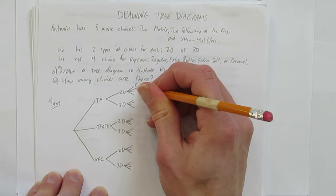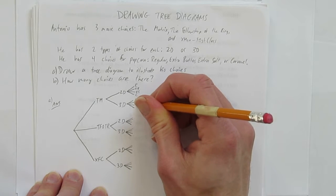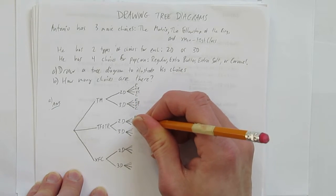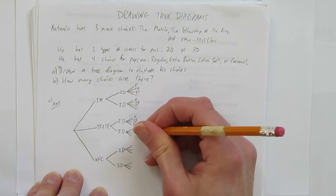So I'll go regular, extra butter, extra salt, or caramel. So I'm using R, EB, ES, or C. R, EB, ES, C. And I've got to keep doing them all.